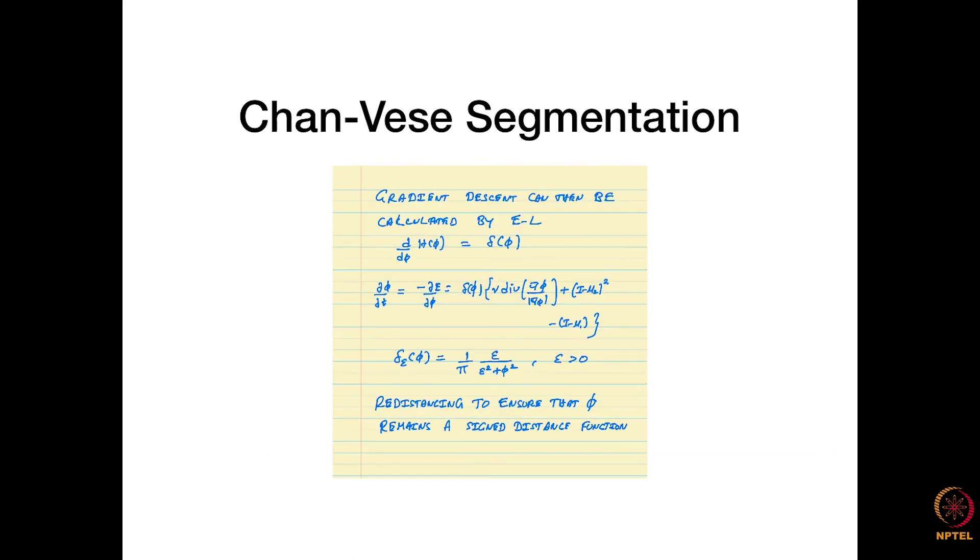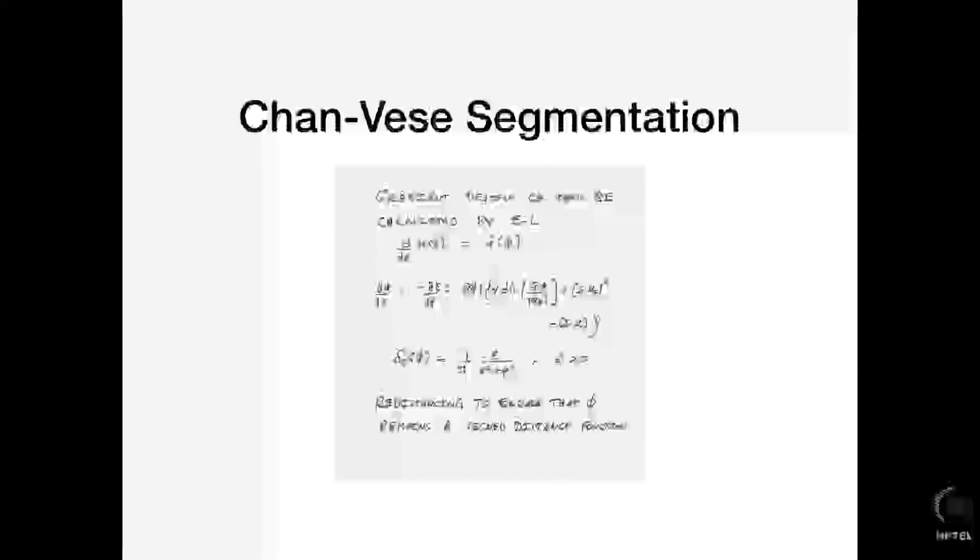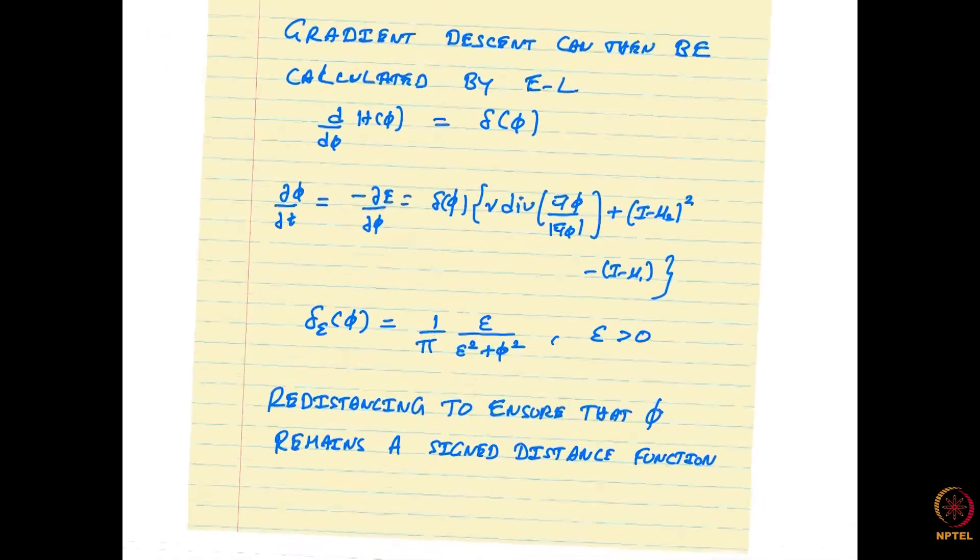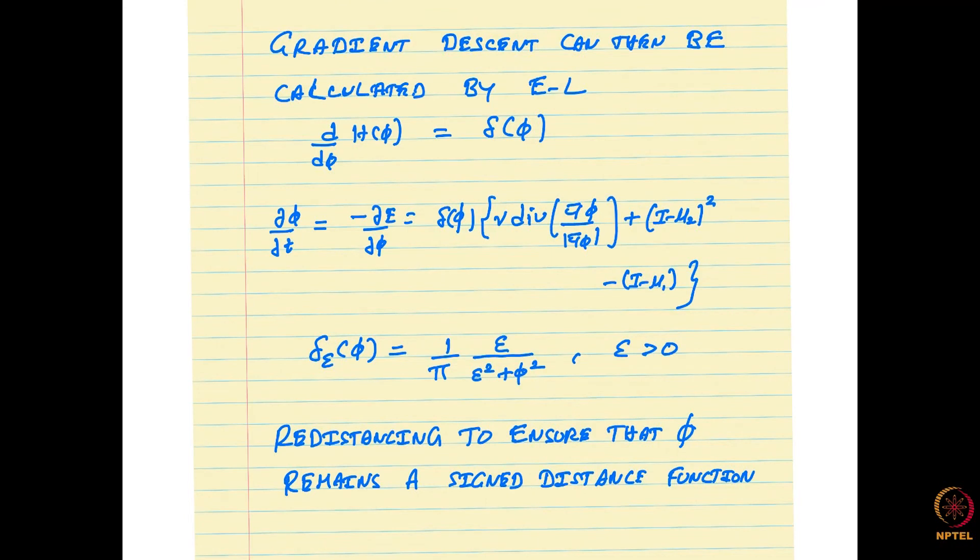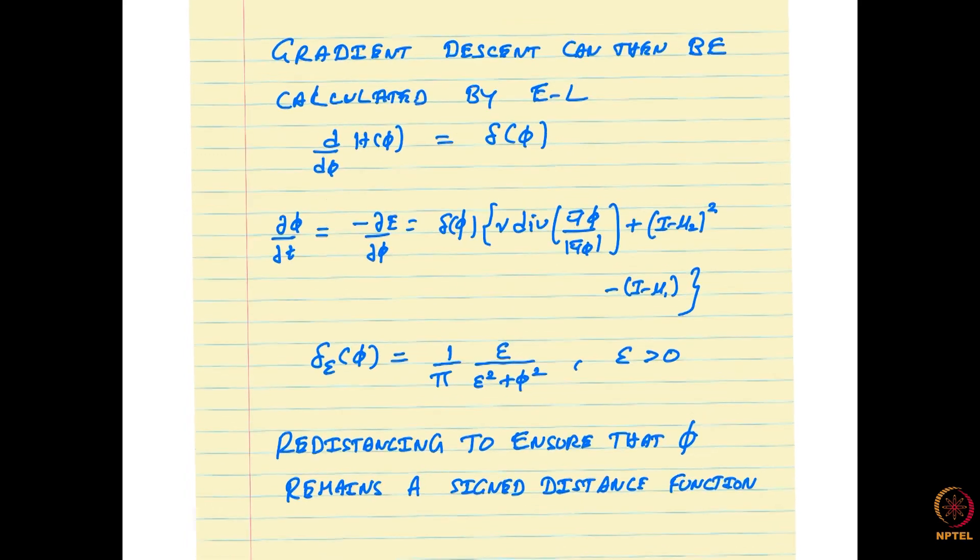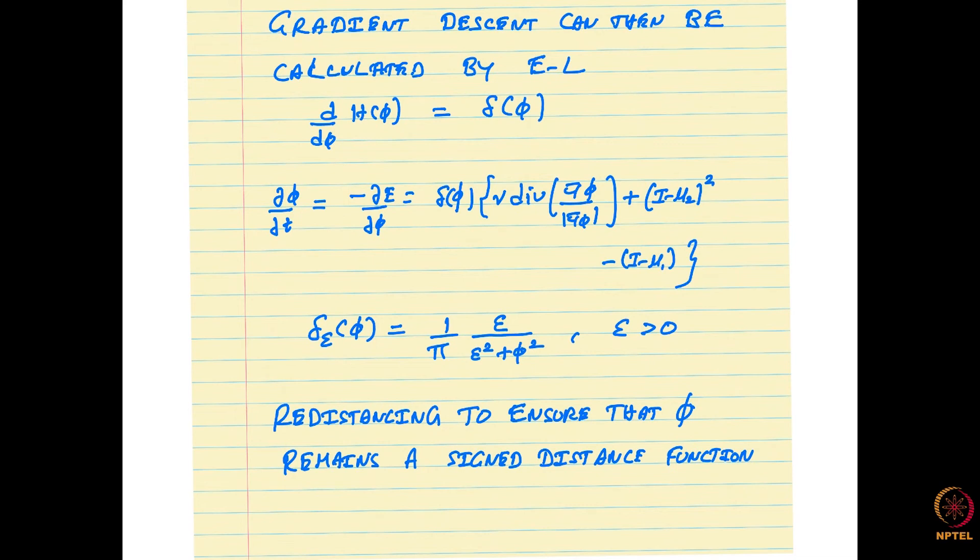People do this because the derivative with respect to that is delta phi. With all that put in, then we can actually write down the Euler-Lagrange equations for that function, where once again this is in terms of the level set function phi. d phi by dt is given by this expression here, and we have made once again smooth approximations to both H and delta. Of course, we solve this by gradient descent to get an appropriate segmentation.